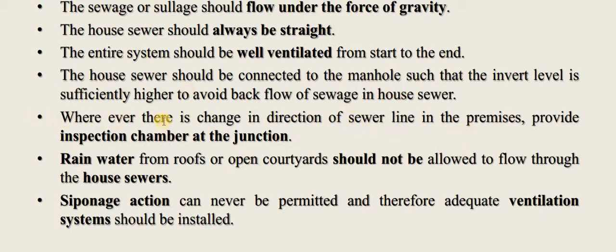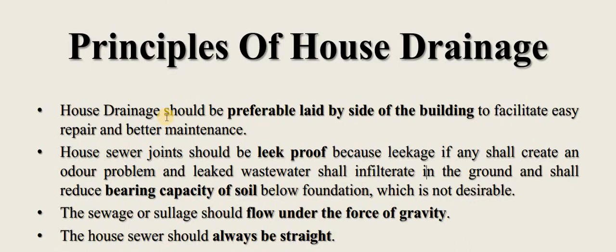Wherever there is a change in direction of the sewer line in the premises, an inspection chamber must be provided at the junction. Rainwater from roofs or open courtyards should not be allowed to flow through the house sewers, as it creates additional pressure and may cause leakages. Siphonization action can never be permitted and therefore adequate ventilation should be installed. These are the principles to maintain while designing the house plumbing system.